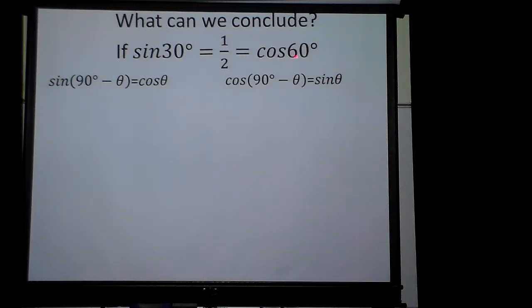So, cosine, notice that's 60, 90 minus 30 makes 60, equals the sine of 30, where we started with. They both were one half.